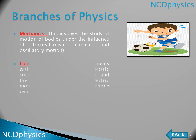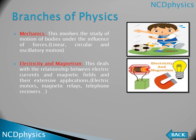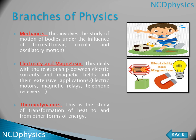The second branch is electricity and magnetism. This deals with the relationship between electric current and magnetic fields and their extensive applications, for example electric motors, magnetic relays, and telephone receivers. We study how electricity is produced by magnetism and how magnetic fields are produced by electric current.